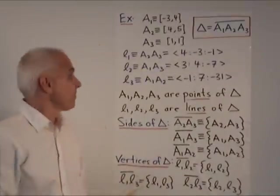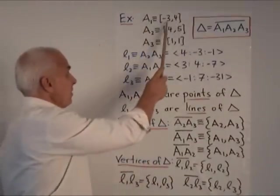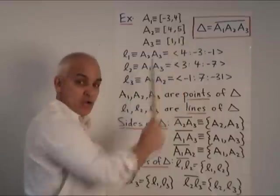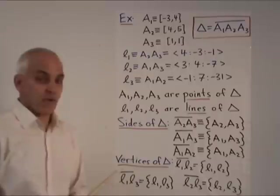Triangles are fundamental objects of study in geometry as I hope you all know. So here's an example. We have three points A1, A2, A3: [-3,4], [4,5], [1,1]. Those are non-collinear points you can check and they determine therefore a triangle.